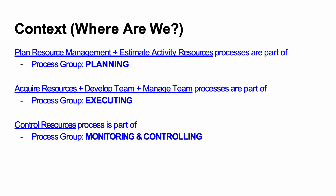Let's pause to see where we are. I always like to ensure that we understand a particular knowledge area's processes in the context of process groups. We know that there are 10 knowledge areas and five process groups, and processes within knowledge areas can be mapped to those process groups. The five process groups are initiating, planning, executing, monitoring and controlling, and closing.